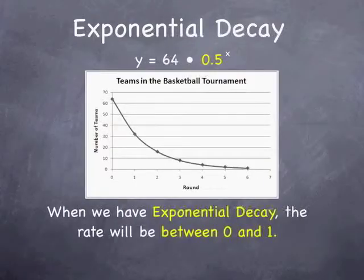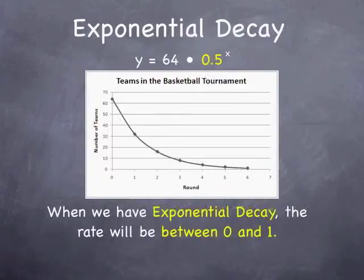On the other hand, when we have exponential decay, the function will be decreasing from left to right. With this graph, I have teams in a basketball tournament. At the start of the tournament, there are 64 teams, but as the rounds progress, fewer and fewer teams are involved. As a result, my decay rate is 0.5. It is important to remember that when we have exponential decay, the rate will be between 0 and 1.